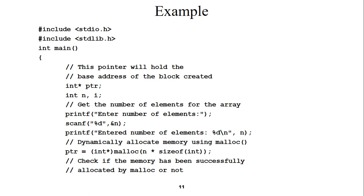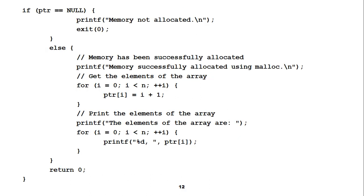Now we check whether memory was successfully allocated or not. When we declared the pointer ptr, its initial value was null. If ptr is still null after malloc, it means memory was not allocated, and we call the exit function. The exit function is defined in stdlib.h — that is why we included stdlib.h. Otherwise, if ptr is not null, memory has been successfully allocated.